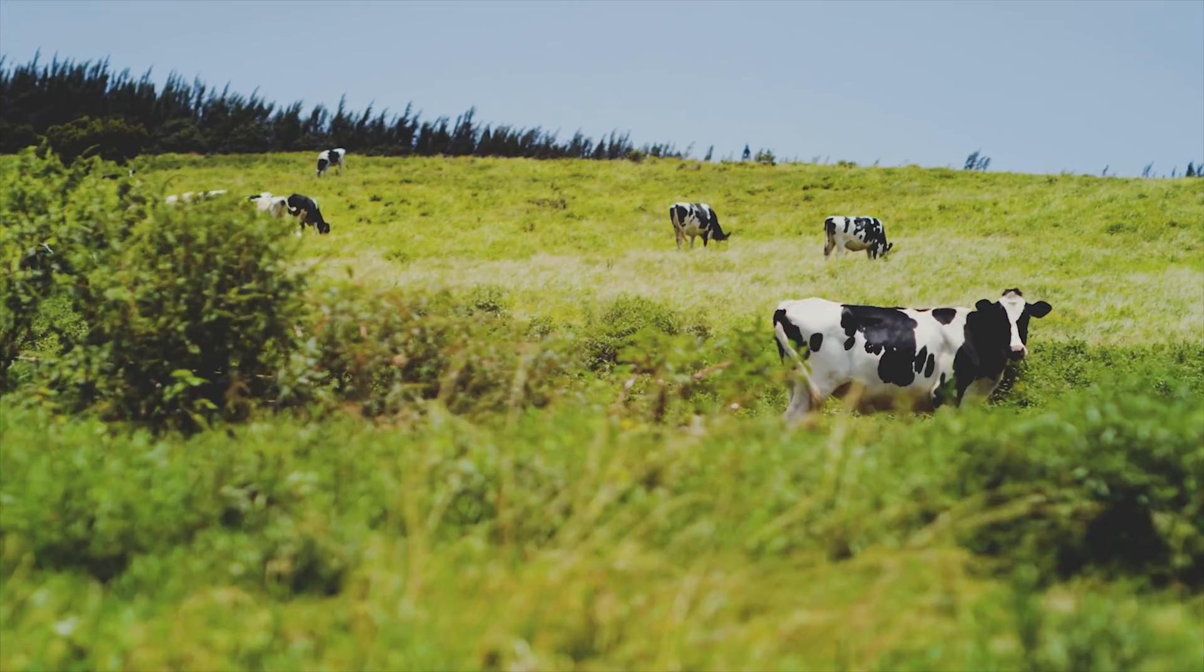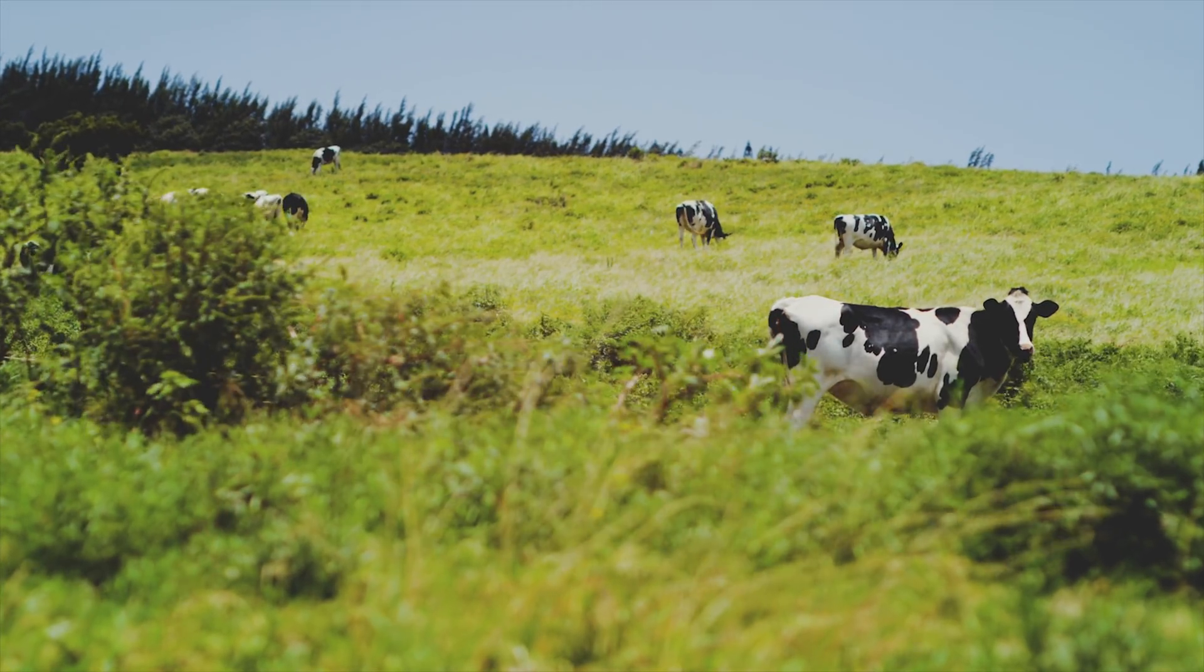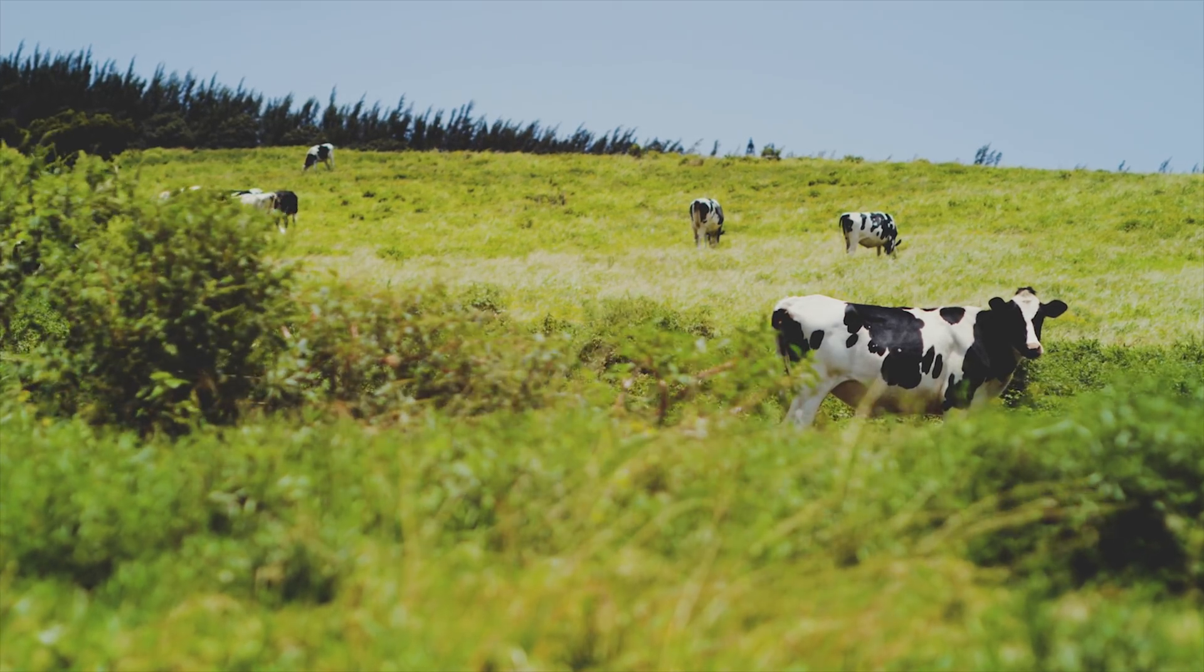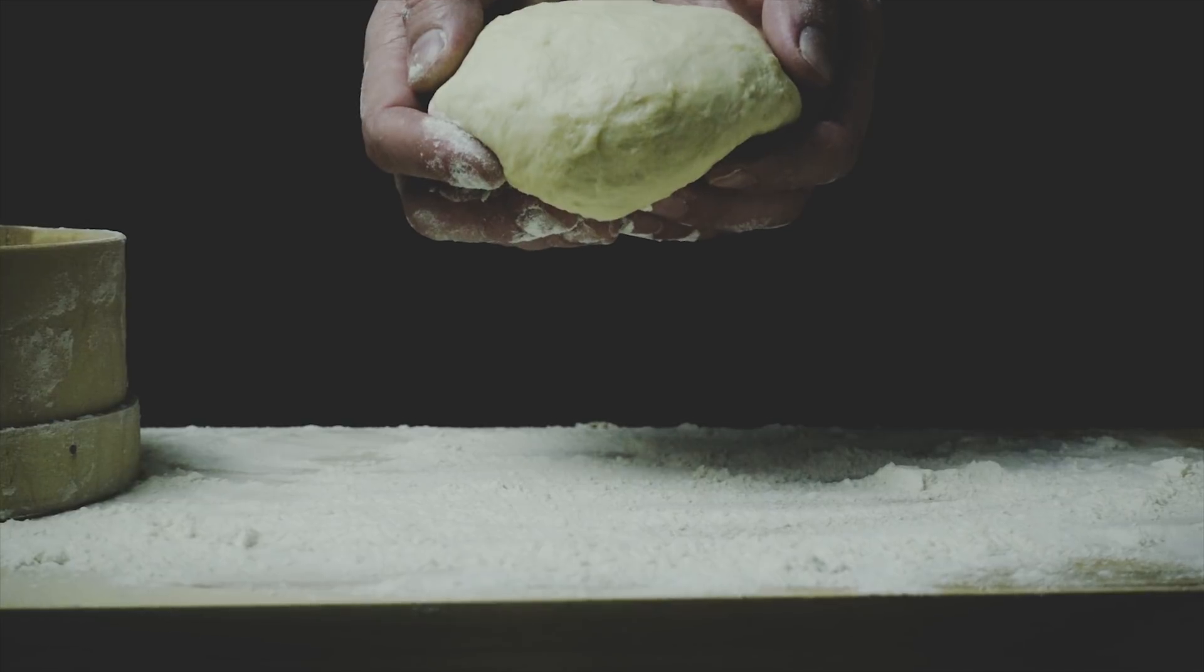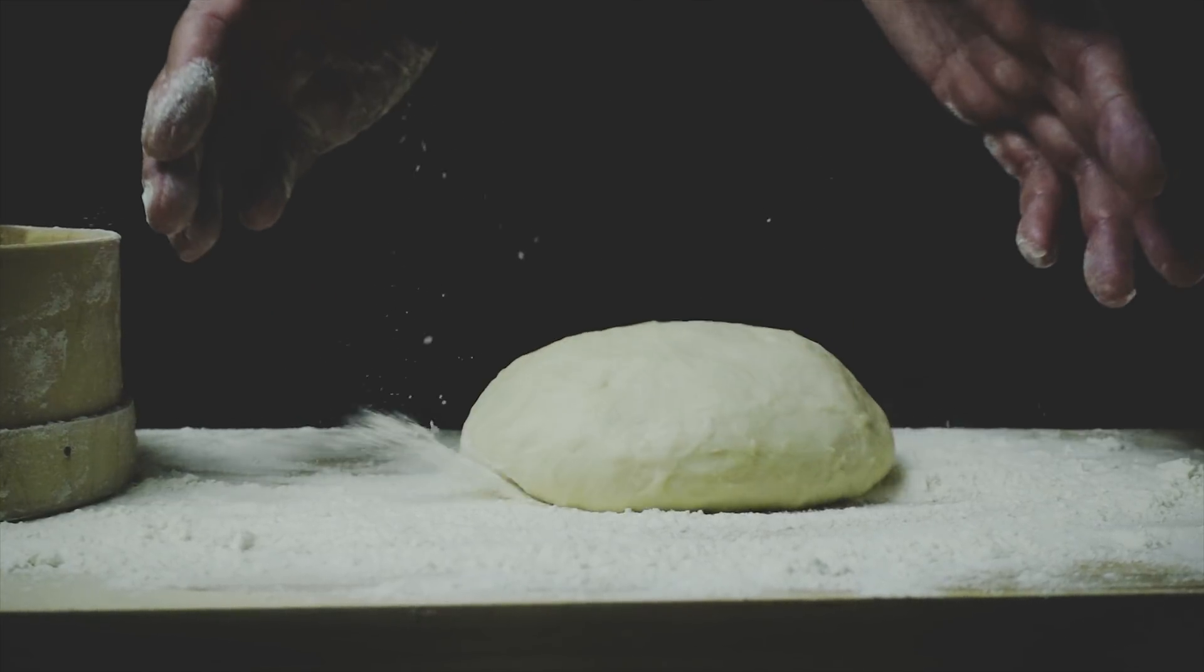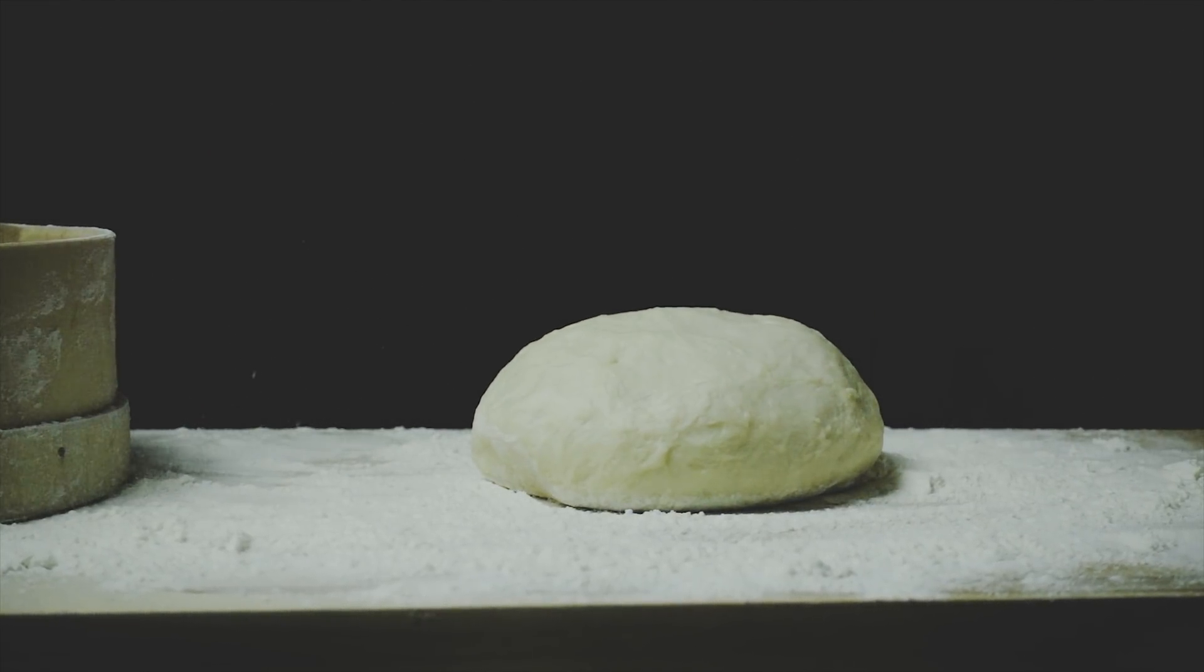Since the satellite cells can only divide around 20 times, new cells have to be harvested from animals once in a while. In contrast, a pluripotent stem cell line is like sourdough yeast. Once you have it going, you have it forever.